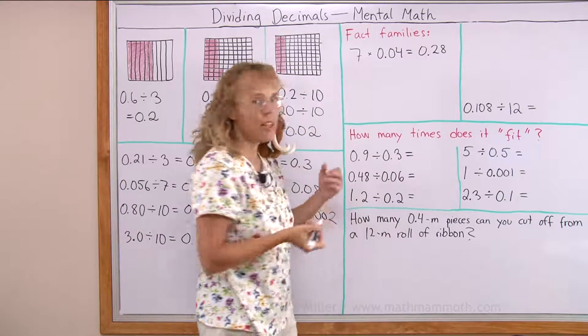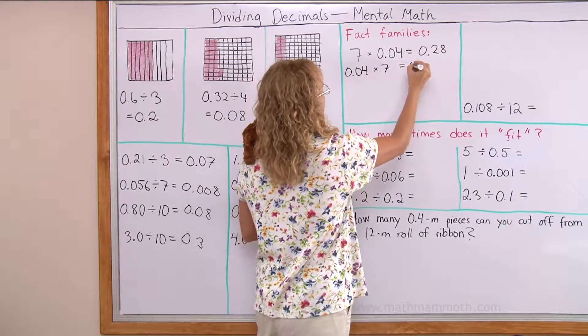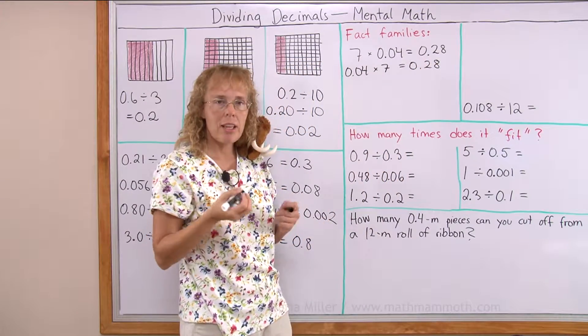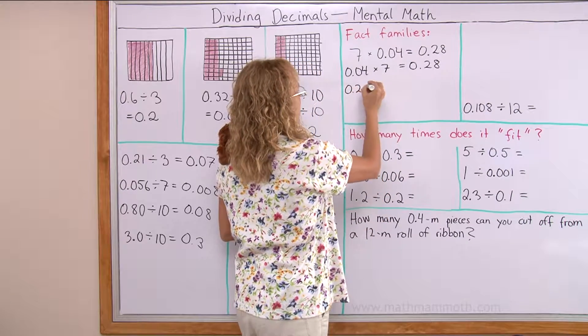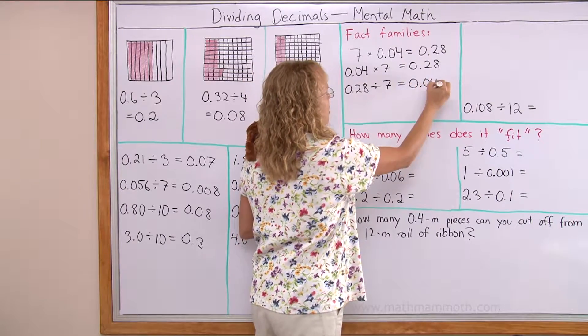But I can write another multiplication by switching the order of these factors here. And then I can write the division. The division always starts with your total, with this number here, divided by 7 would be 4 hundredths.